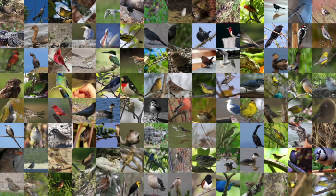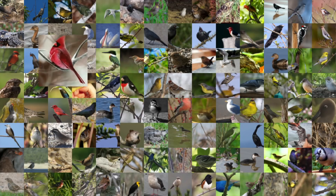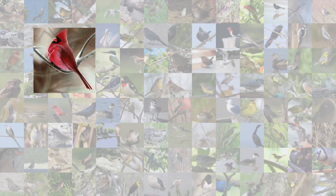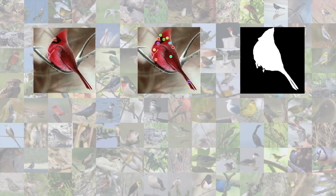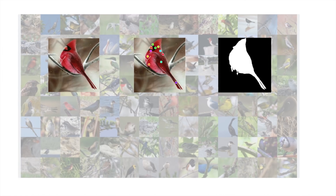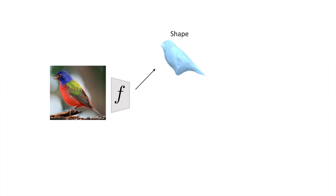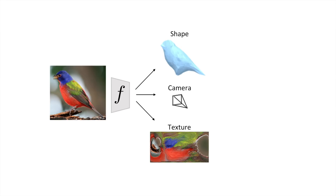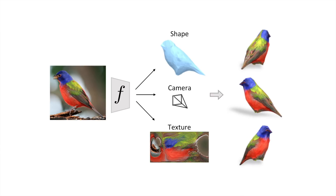Here, we assume that we have many images of an object category but only one viewer instance, and each instance is annotated with a set of semantic keypoints as well as the ground truth segmentation mask. Using this image collection with the keypoint and mask annotations, we learn a predictor F, which can, given a single unannotated image of a new instance, infer its 3D shape in the form of a mesh, the corresponding camera viewpoint, and the mesh texture. Given these predictions, we have a full 3D representation of the object, which we visualize here by rendering it from novel viewpoints.